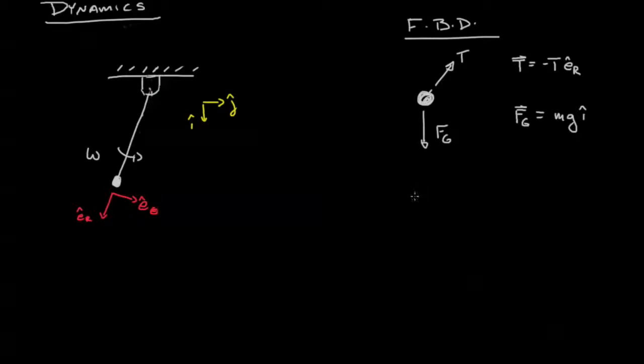Our next step is F equals ma. So we say the sum of the forces equals mass times acceleration, and we're going to be looking at this in vector components. Before we sum our forces, let's go ahead and define some angle theta through which the pendulum has swung. In this case we'll simply sum our forces on the left side. We have negative T e_r plus mg i.